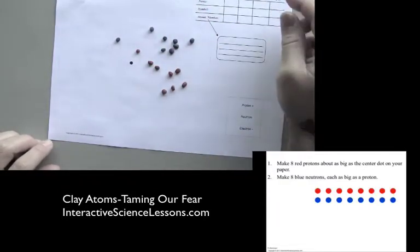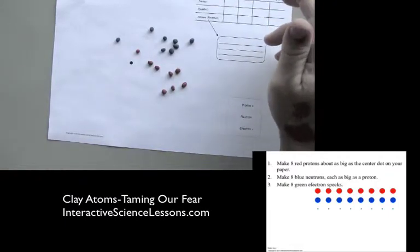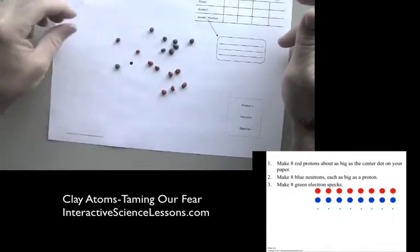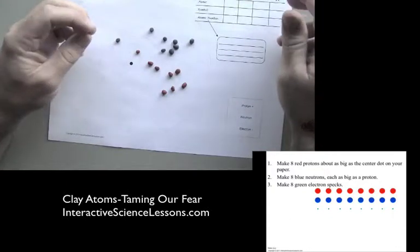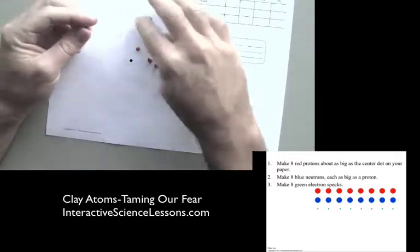We have eight blue neutrons. I like to use blue with neutrons because they sort of rhyme—helps me remember what's what. And when we get to green, you may have noticed at the beginning that the green clay was a lot smaller than the red and blue.